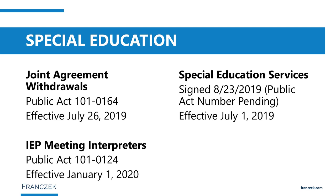Related to that, if IEP services are not being implemented for any reason, within 10 school days after they are supposed to be provided, the parent must receive notice. That notice must also include information that parents can request compensatory services for the services that have been missed.